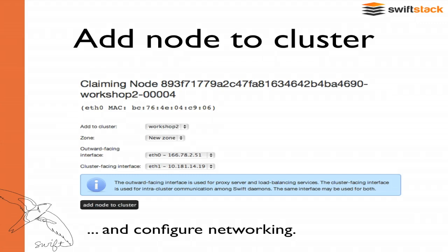When you're adding new devices, you'll be able to say which zone this device lives in. Region support just got added for Grizzly, so that's coming soon. There are two network interfaces in Swift: a front-facing network where clients interact with proxy servers, and an internal storage network which is private to the cluster. In this example, Hugo picked it up automatically — ETH0 is your outward-facing interface and ETH1 is the cluster-facing private IP space.